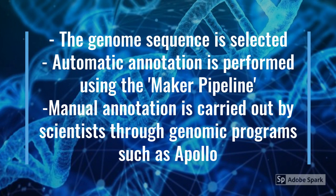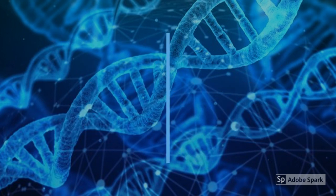This genome can either undergo automatic or manual annotation. Automatic annotation is performed through the maker pipeline, which requires no user input and is run through the computer alone. Or the genome can be annotated through manual annotation. This is carried out by the scientists themselves through genomic programs such as Apollo, Jbrowse and Galaxy. This form of genome annotation is considered more reliable and accurate.